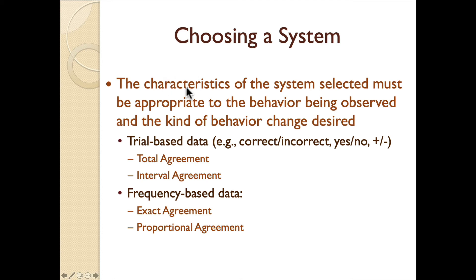How do you choose an IOA system? It really depends on the behavior being observed and how you're measuring behavior. For trial-based data — correct/incorrect, yes/no, plus/minus — total agreement or interval agreement are fine systems. For frequency-based data, you should probably use exact agreement or proportional agreement.